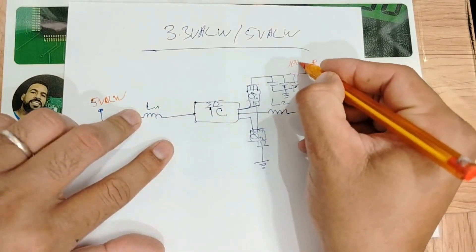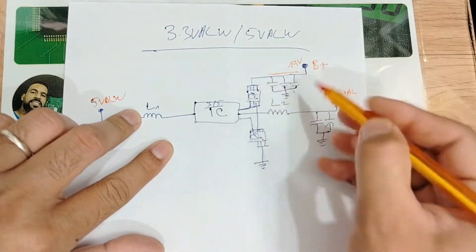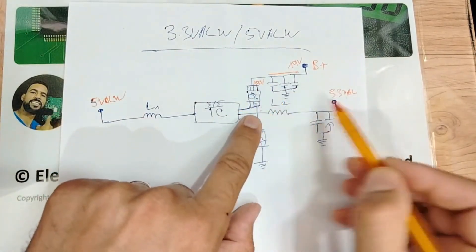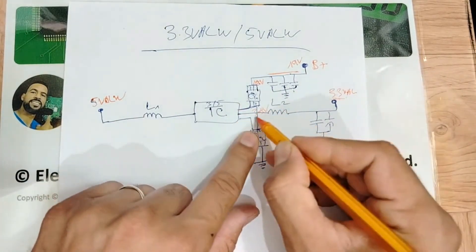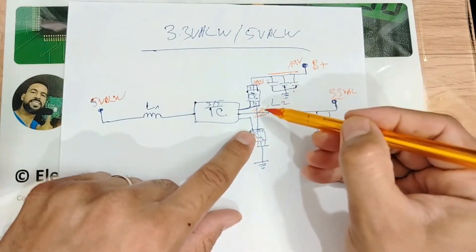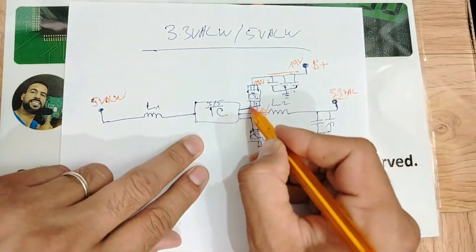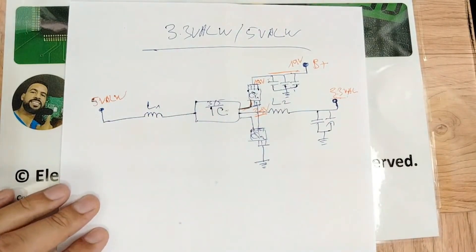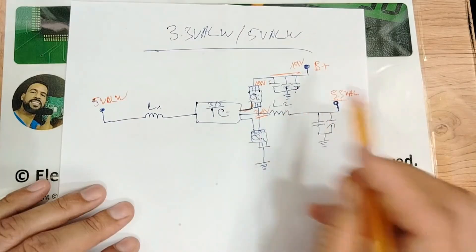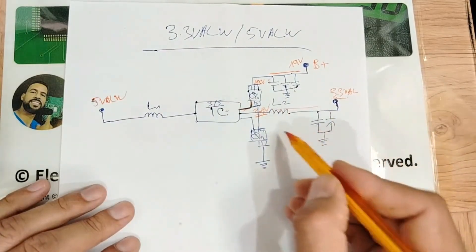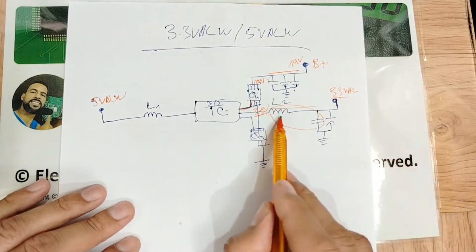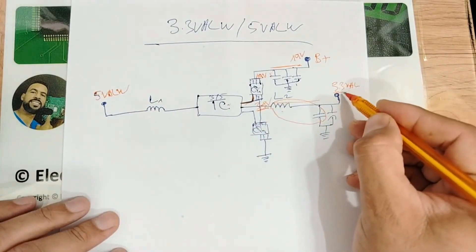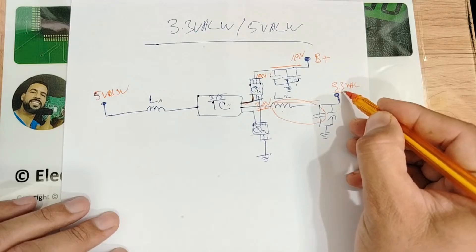The B+ — basically 19 volts — will pass through the input capacitors to be filtered, and then will be present here at the MOSFET. So here we have 19 volts, and here we will get 3.3 volts. Why? Because of this control signal — this is the controller that controls the MOSFET. After that, the 3.3 volts will pass through this inductor. The coil and the inductor are here for filtering, to get a pure and exact 3.3 volts at the output side.